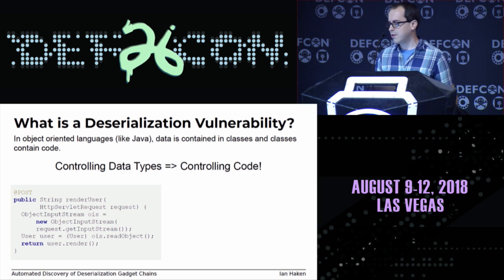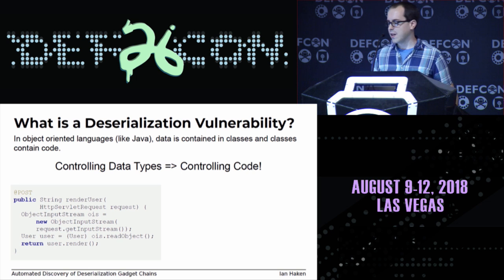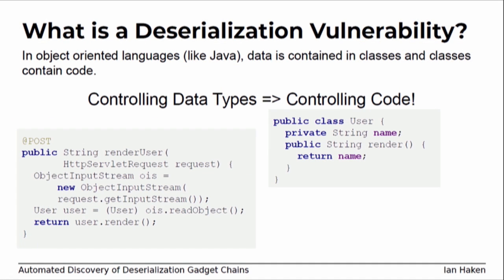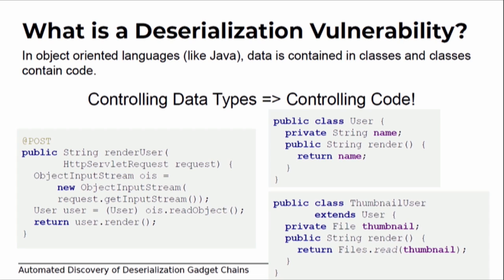Here's a classic Java deserialization vulnerability: a REST endpoint that reads a POST body and passes it into an ObjectInputStream, then reads some object out of it, casting that object to a user and calling render on it. The developer intends this to be a user class with a name that gets returned — totally innocuous. But if you had something like a ThumbnailUser on your class path that extends User and reads a file from disk when you call render, an attacker can send a ThumbnailUser instead and read any file off the disk.